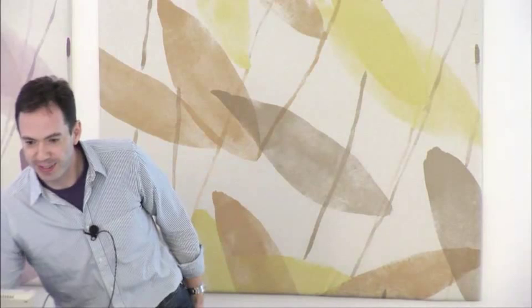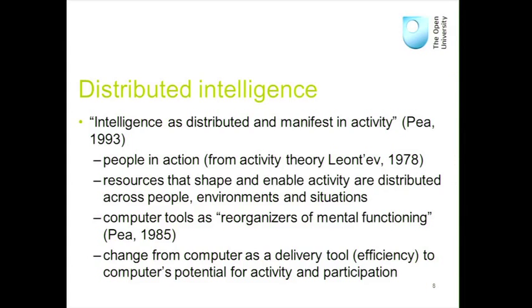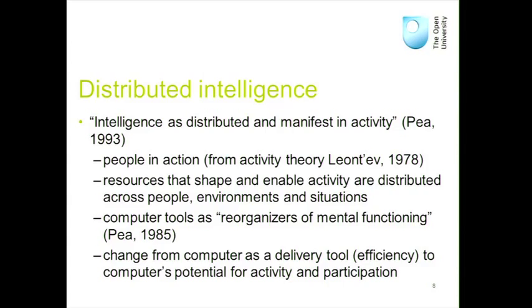Distributed intelligence is my favourite — this is Roy Pea, based at SRI (Stanford Research Institute). He completely took on board the activity theory stuff in the 70s and it influenced his work for 20 to 30 years. He applied this in the context of computers as tools and reckoned that intelligence wasn't an attribute of an individual but an attribute of a society, a group — distributed between people and between the tools they use. We're able to be clever partly because of the tools we're using; there's intelligence mediated through those tools.